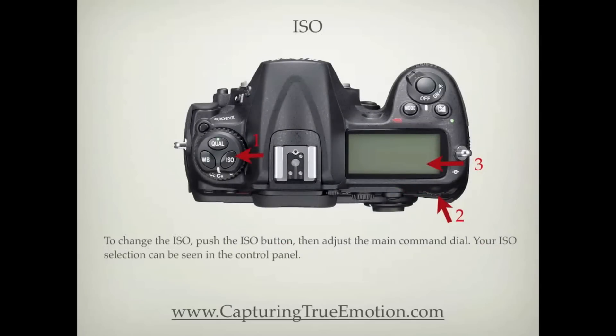To change the ISO, push the ISO button, then adjust the main command dial. Your ISO selection can be seen in the control panel.